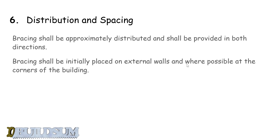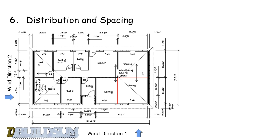Distribution and spacing: bracing shall be approximately distributed and shall be provided in both directions. Bracing shall be initially placed on external walls and where possible at a corner of the building. For wind direction 1 we had four sheets, which is great — four corners — and we have walls that work for us, so we can put those four sheets on the four corners.